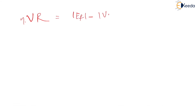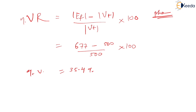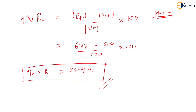Voltage regulation percentage = (Ef − Vt) / Vt × 100 = (677 − 500) / 500 × 100 = 35.4%. This is the percentage voltage regulation using the EMF graphical method.